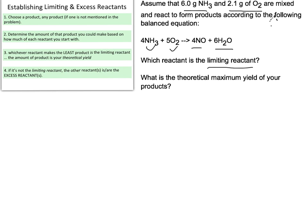Let's talk about what limiting reactant means. The limiting reactant is the reactant that dictates the amounts of everything else that is produced. If one reactant is present in a smaller amount, it will get used up first, and it will subsequently dictate the amounts of products that you can obtain.